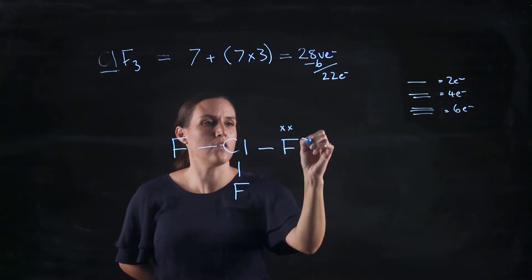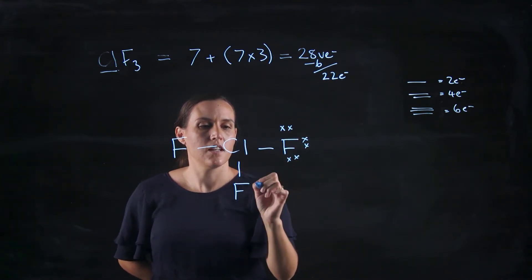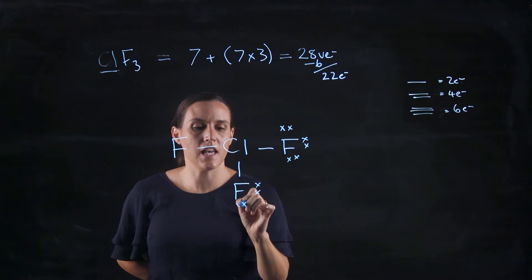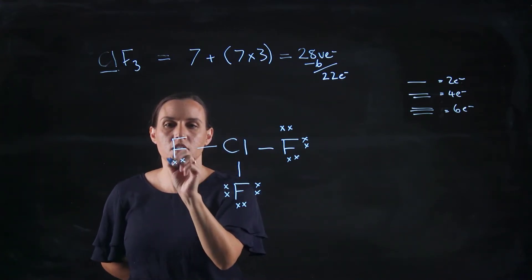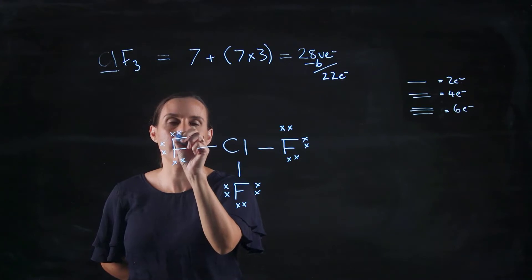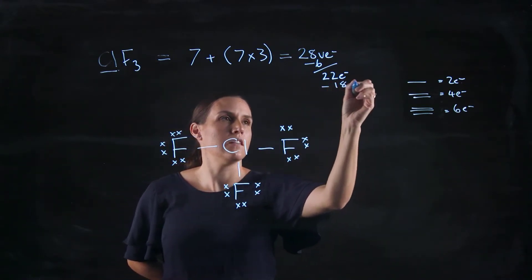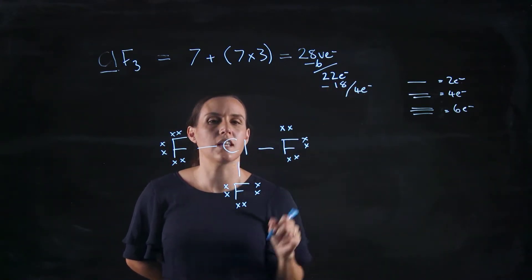One, two, three, four, five, six, seven, eight, nine, ten, eleven, twelve, thirteen, fourteen, fifteen, sixteen, seventeen, eighteen. So we've got four electrons left over.